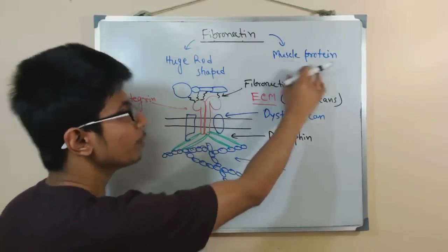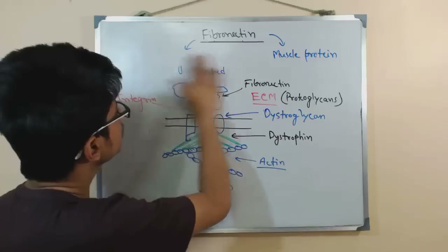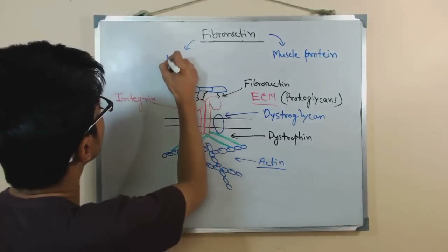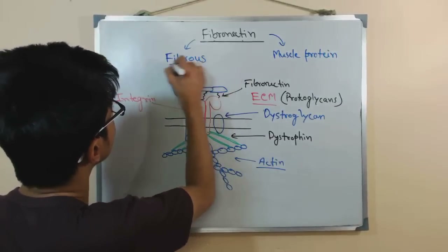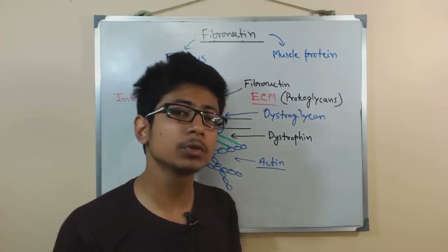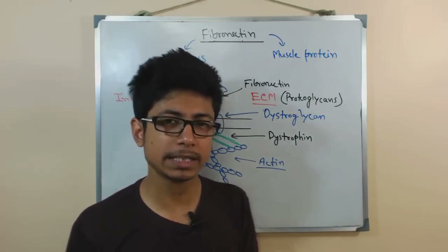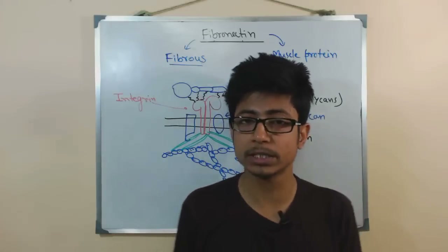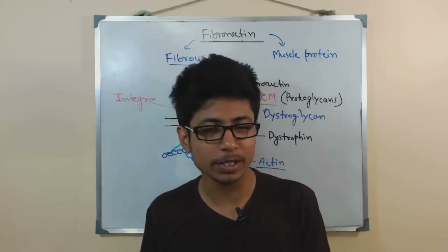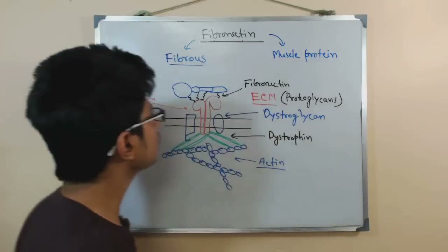Fibronectin is a type of muscle protein and is also fibrous in nature. Fibrous proteins are usually non-soluble in water. However, there are two varieties of fibronectin: one is a typical fibrous, non-soluble type, and another which is soluble in water — that is called blood fibronectin or plasma fibronectin.